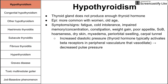We also see increased diastolic pressure. Thyroid hormone normally activates beta receptors in the peripheral vasculature, causing vasodilation. Without it, you get vasoconstriction — the heart is pumping against closed vasculature — resulting in decreased pulse pressure and increased diastolic pressure.